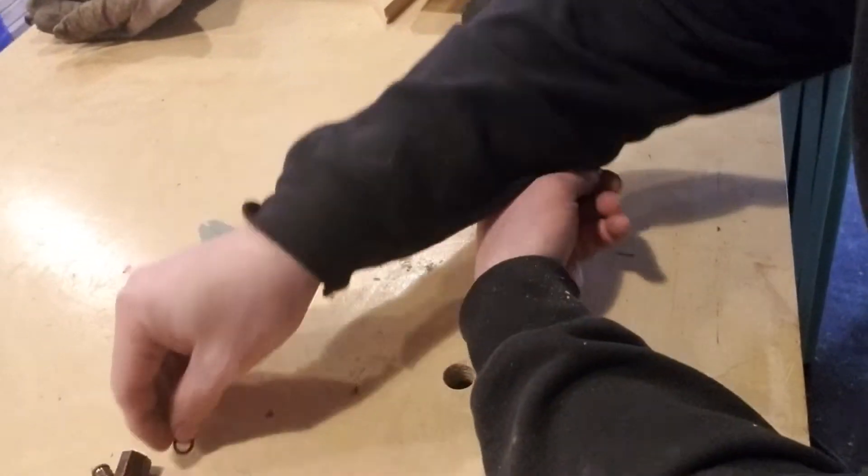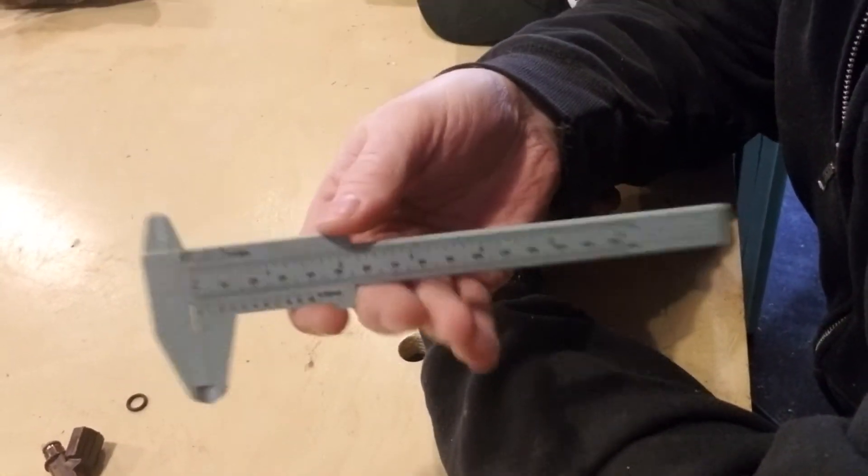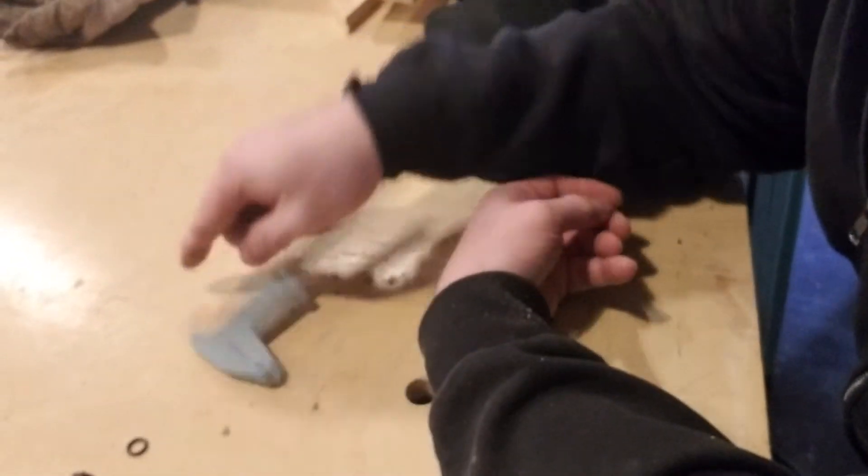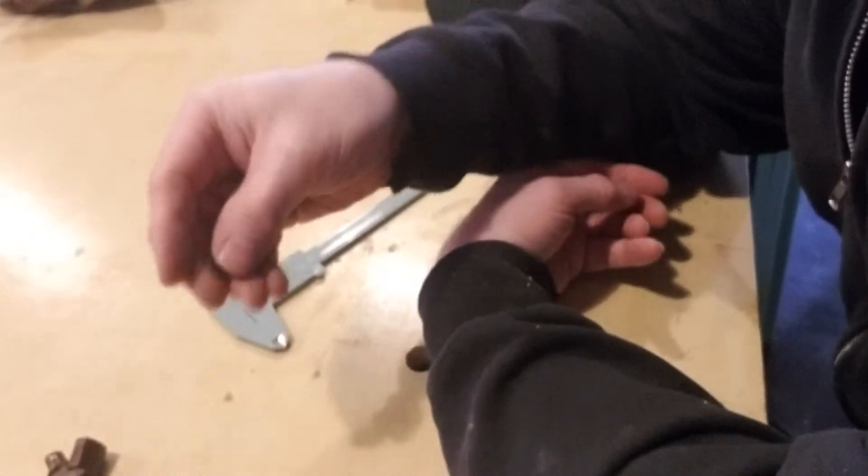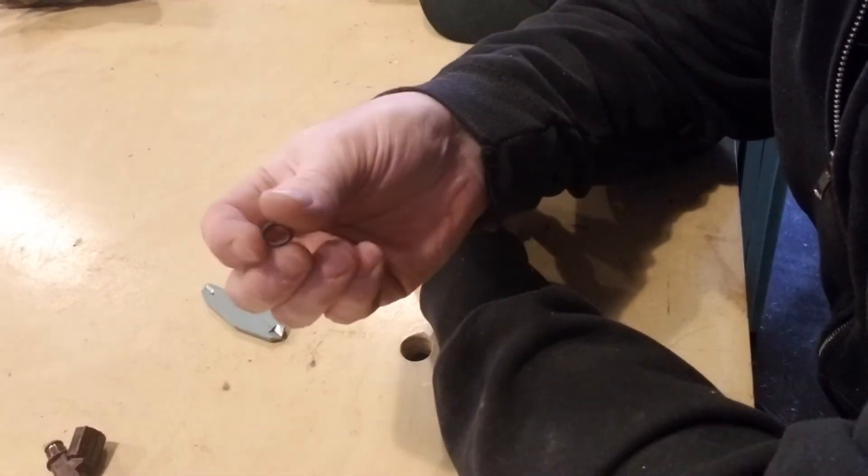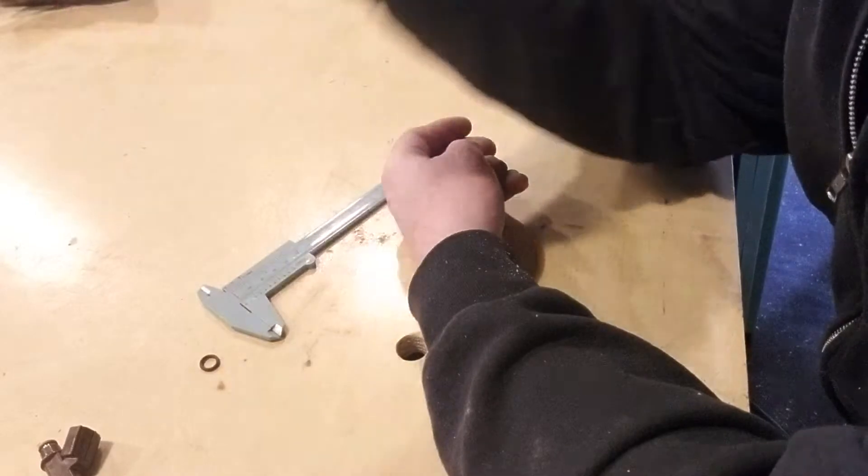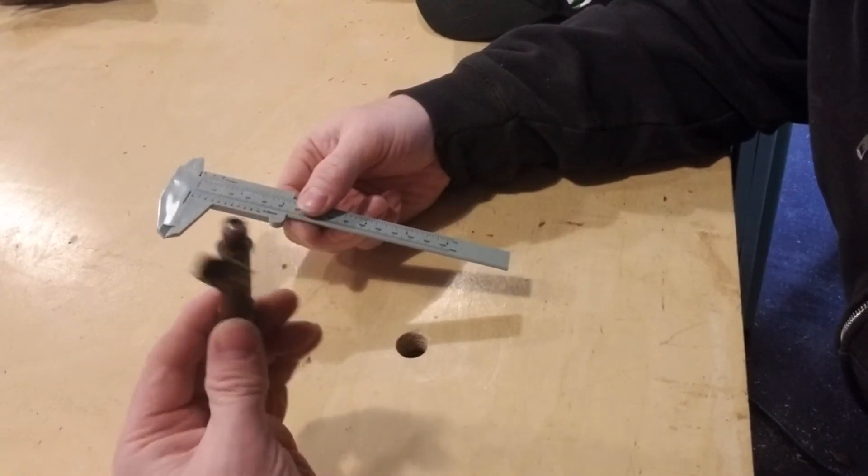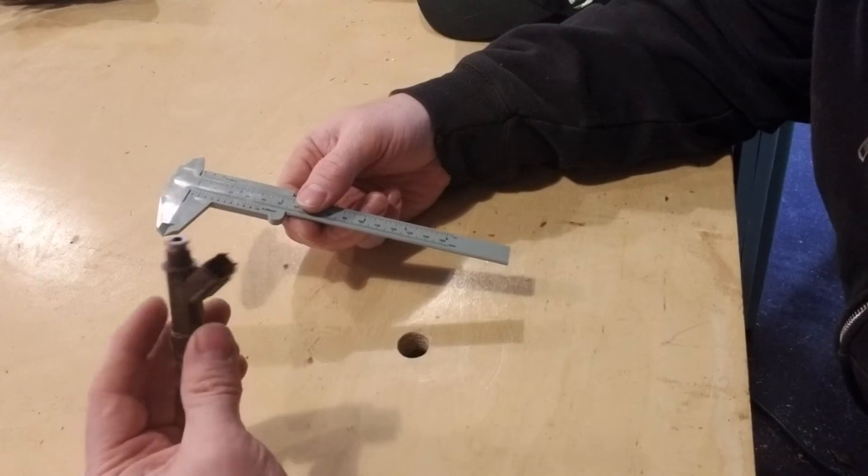So instead, I bought a pair of calipers online, pretty cheap. I'll put the link below for that. And then the universal O-ring. And that was it. So save myself a little bit of money and be able to fix my leaky fuel injector.